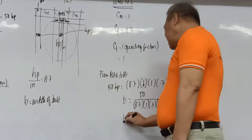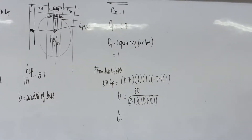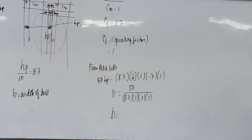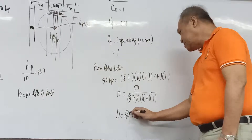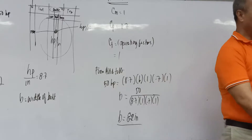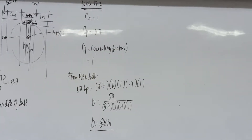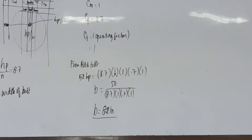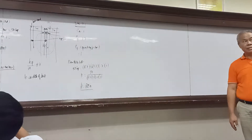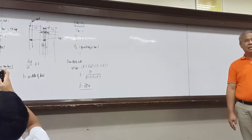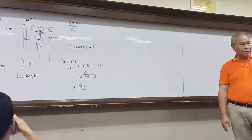The thickness of the belt is standard from Table 17.1. For a medium double leather belt, the standard thickness is 30/64 inches. This is a standard value — you don't need to design it. Single, double, and triple ply belts each have different standard thicknesses listed in Table 17.1.